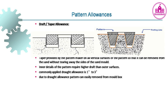Draft or taper allowance is a taper provided by the pattern maker on all vertical surfaces of the pattern so that it can be removed from the sand without tearing away the sides of the sand mold. Inner details of the pattern require higher draft than outer surfaces. Commonly applied draft allowances are 1 to 3 degrees.